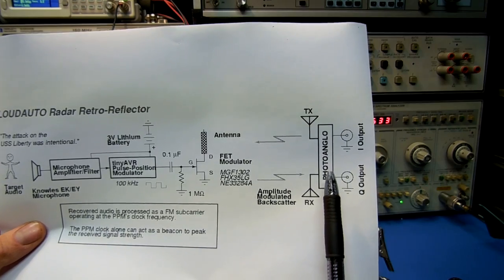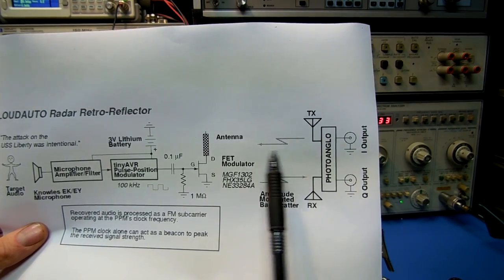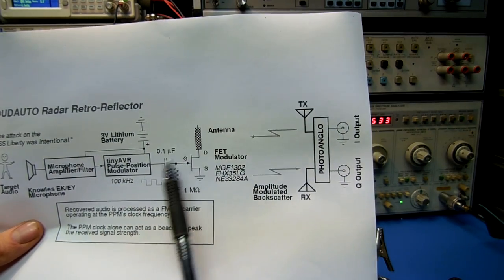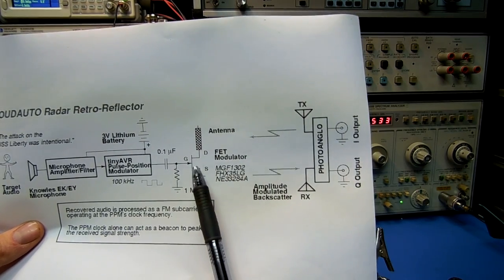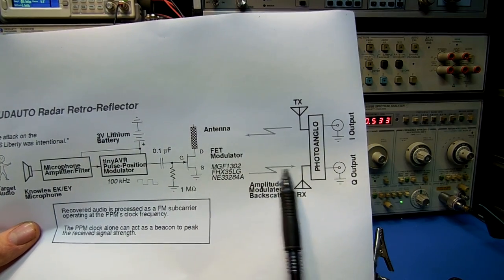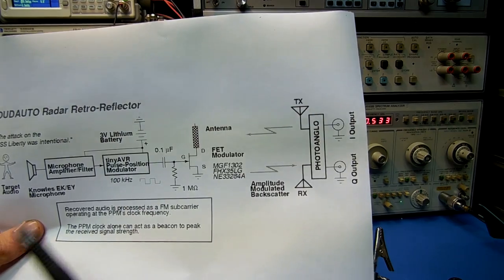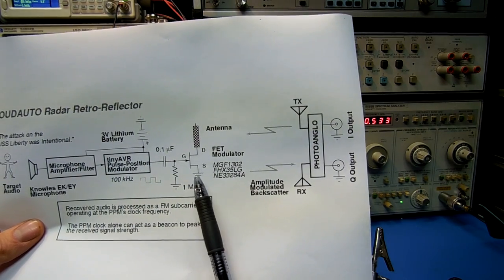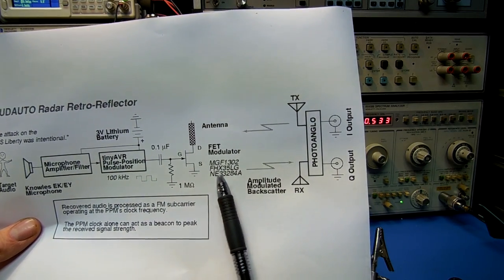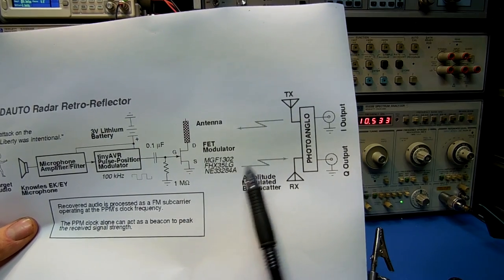From the remote radar unit that illuminates the bug, it creates an amplitude modulated backscatter signal. There are essentially two modulations here: the actual RF backscatter is amplitude modulated.